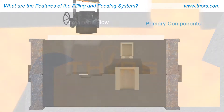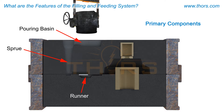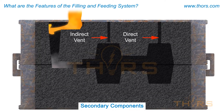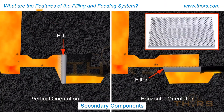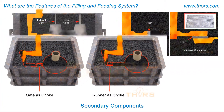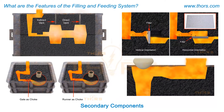The primary components of the filling system include the pouring basin, sprue, runner, and gates. Secondary components such as vents, filters, chokes, and stoppers are also used as needed.